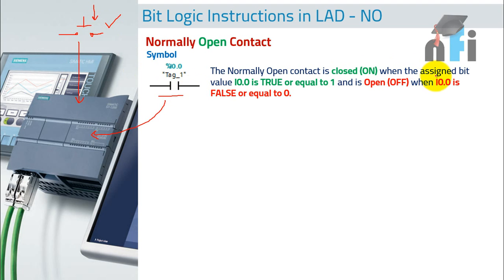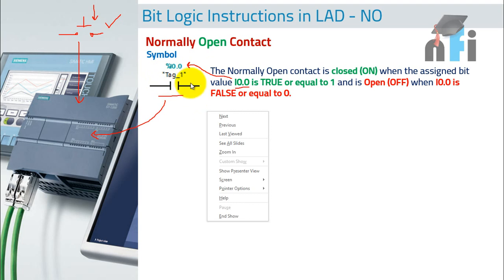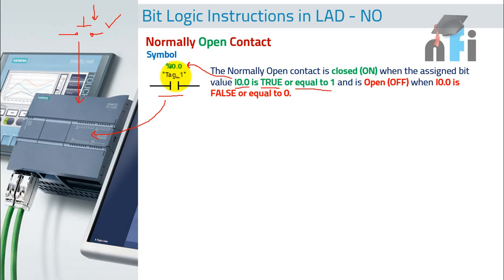This contact goes on when the assigned bit, the value I0.0 — this is the address. This goes through as true, meaning it closes when I0.0 is true or equal to one. And this bit is open or off when the address I0.0 is false or equal to zero. This address is either true or false, and it depends upon the switch or the signal which is connected to this input.